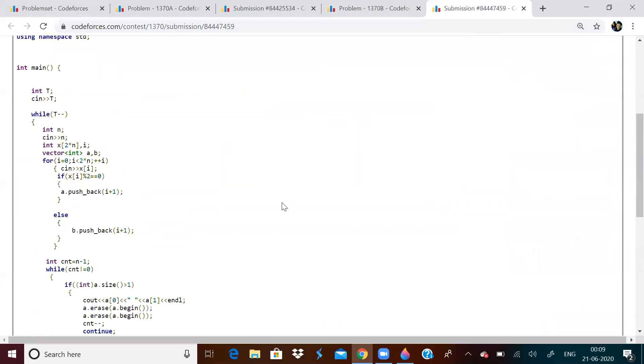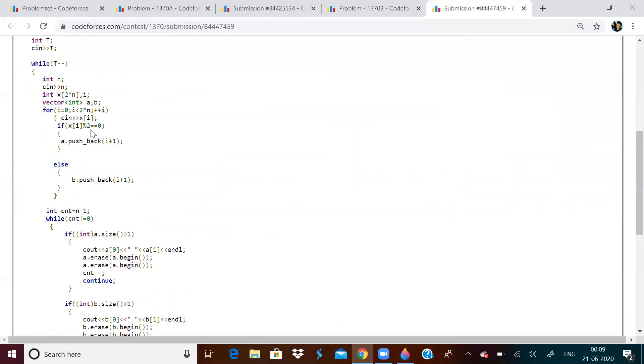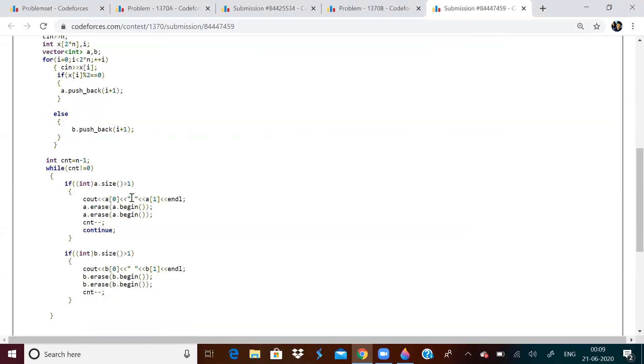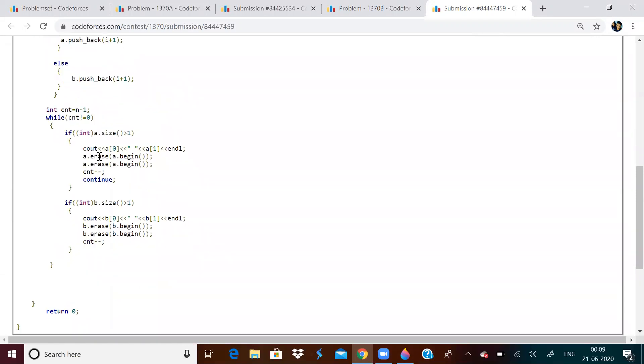So what did I do? I just stored all the indices of even elements in vector a and all the indices of odd elements in vector b. Remember it is one-based indexing, that is why I have written plus 1. Later what I have done, I have just initialized count to n minus 1 and I will print n minus 1 lines.